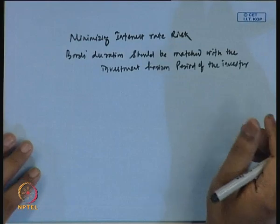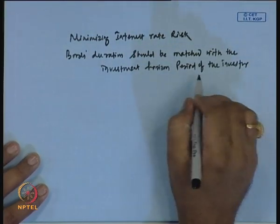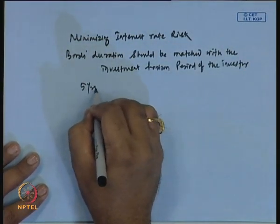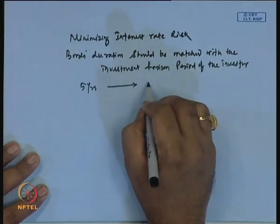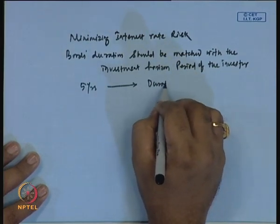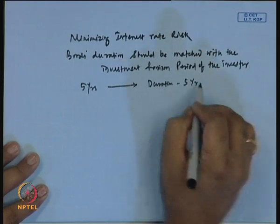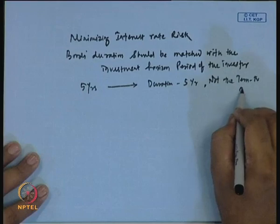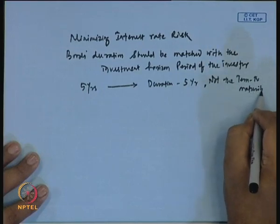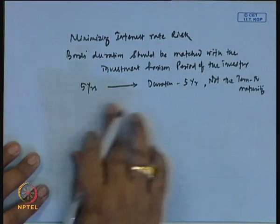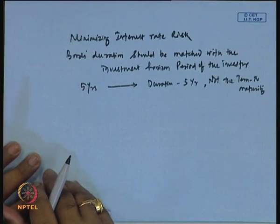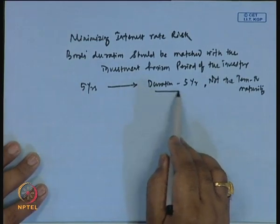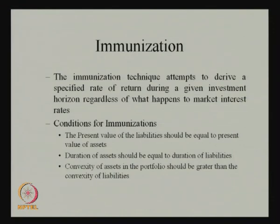The basic objective of the immunization strategy is that the bond's duration should be matched with the investment horizon period of the investor. That means if my investment horizon period is 5 years, I should hold a bond whose duration is 5 years — not the term to maturity. The term to maturity will definitely be more than the duration.